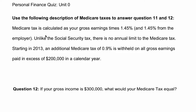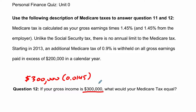Medicare taxes are calculated as your gross earnings times 1.45%. So our gross income — let's assume that's our gross earnings — is $300,000. We're going to multiply that by 0.0145. But there's more. Unlike Social Security tax, there's no annual limit to Medicare tax. Starting in 2013, an additional Medicare tax of 0.9% is withheld on all gross earnings paid in excess of $200,000 in a calendar year.